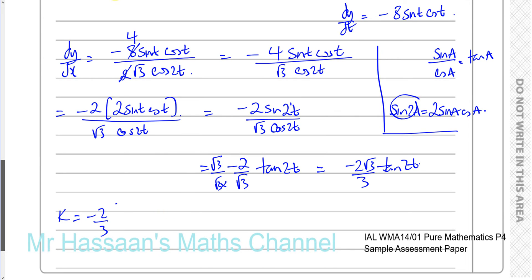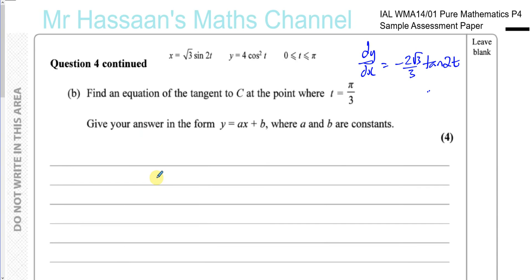dy/dx is our gradient function, which we need for part B. Part B says: find an equation of the tangent to C at the point where t equals pi over 3.